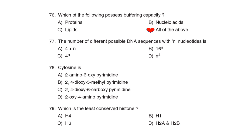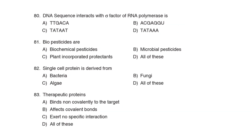74th Question: The number of different possible DNA sequences with N nucleotides is Correct Answer: Option D: 4^N. 75th Question: Cytosine is Correct Answer: Option D: 2-oxy-4-amino-pyrimidine. 76th Question: Which is the least conserved histone? Correct Answer: Option V: H1.